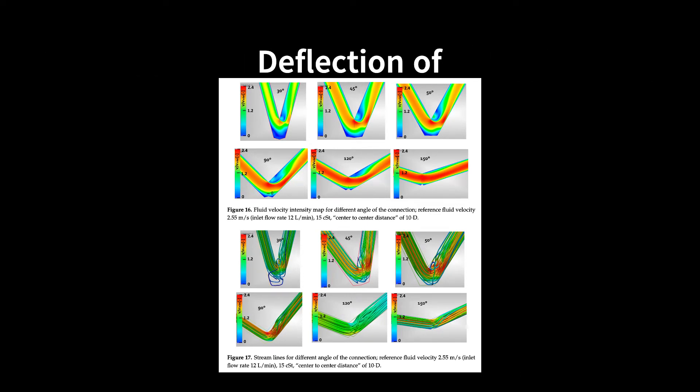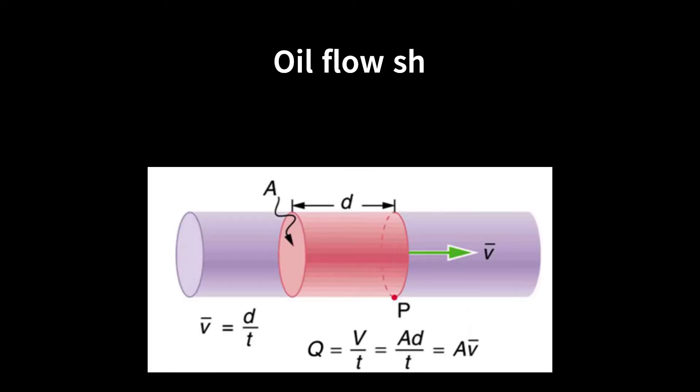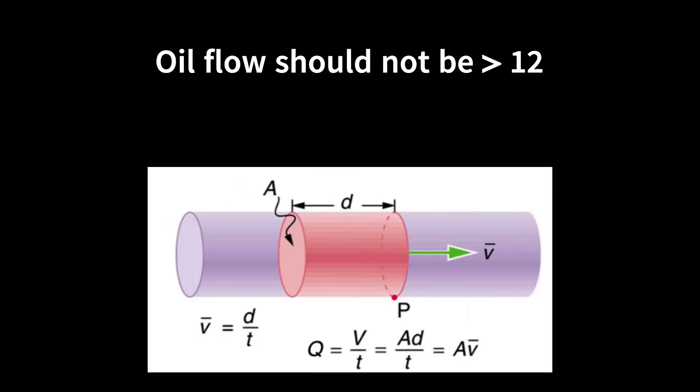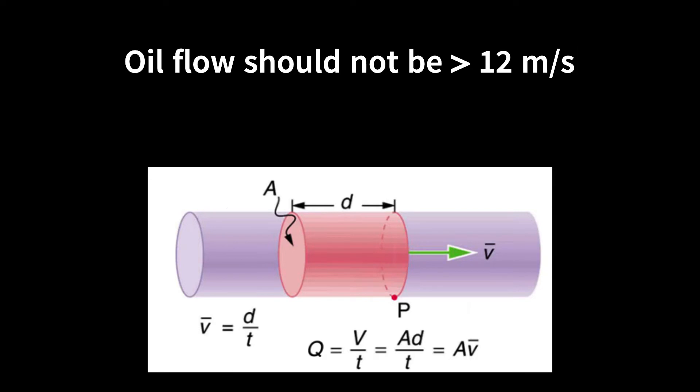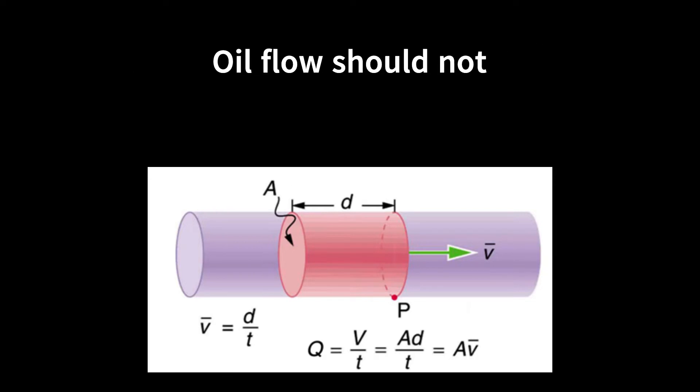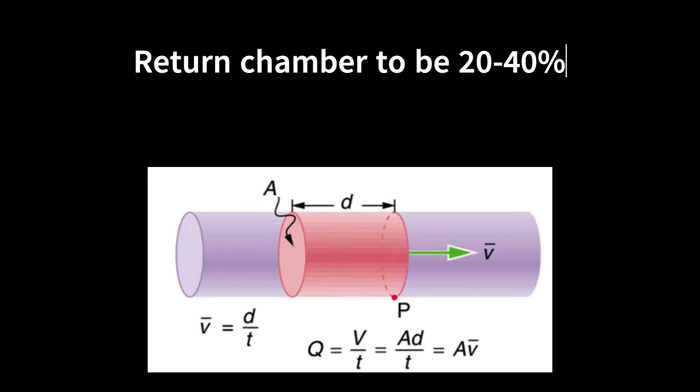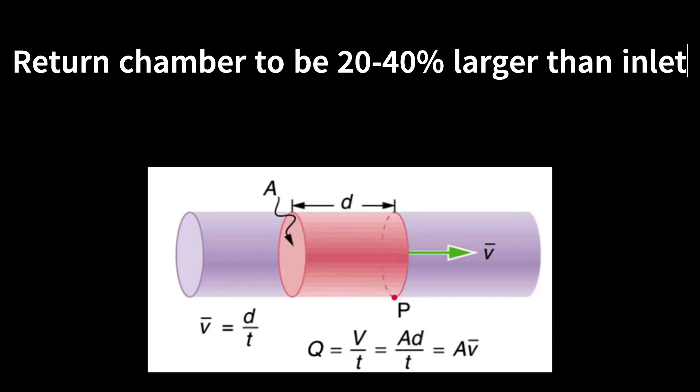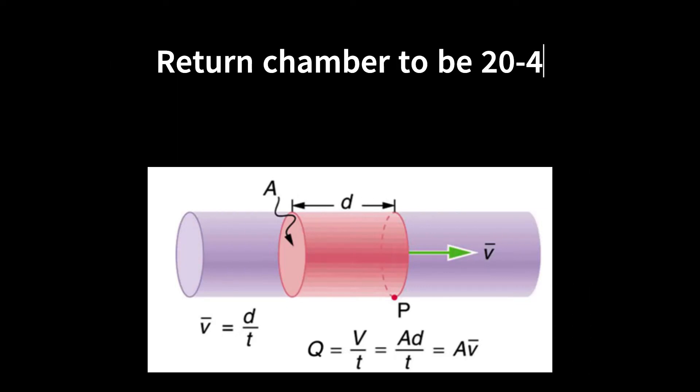For oil chambers, the flow rate of hydraulic oil in the chamber should not be higher than 12 meters per second, and the oil return chamber should be 20 to 40 percent larger than the inlet chamber.